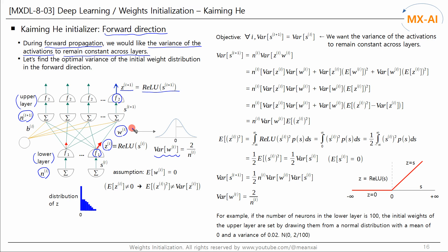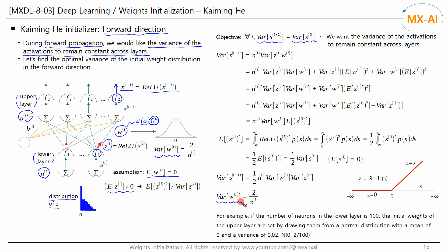When we try to initialize W_i using a normal distribution with mean 0 and variance sigma squared, we will try to find the optimal sigma squared. We assume that the mean of W is 0, but the mean of Z is not 0, because the distribution of Z is asymmetric since the activation function is ReLU. Our goal is to make the variance of the lower layer output equal to the variance of the upper layer output. This allows input signals with similar distributions to flow from lower layers to upper layers. Let's find the variance of W that achieves this goal.